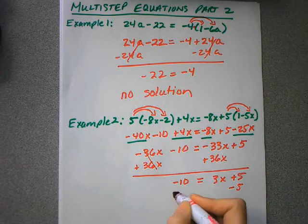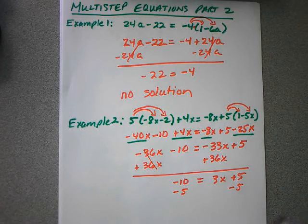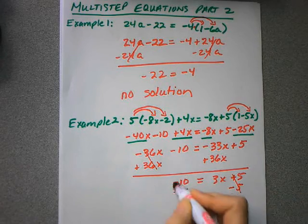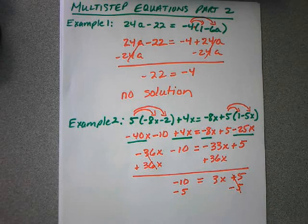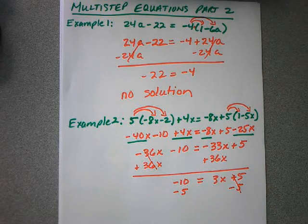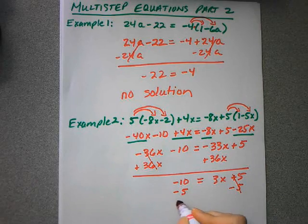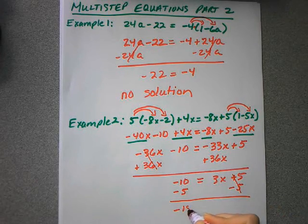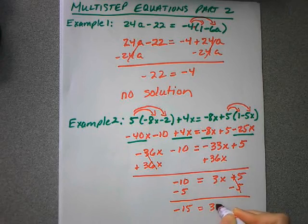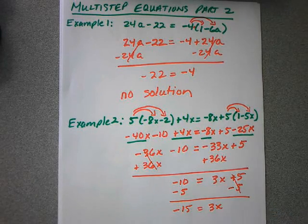So I'm going to subtract 5, do the inverse operation on both sides. And again, remember that a negative plus another negative just becomes a larger negative. We are going to add them because they have the same sign, and end up with negative 15 equals 3x.